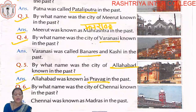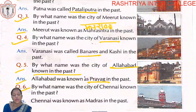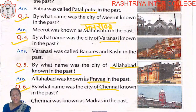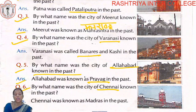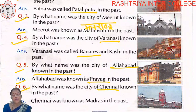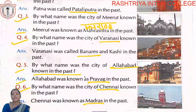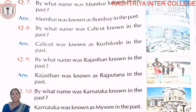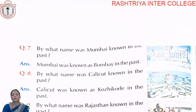Question number six: By what name was the city of Chennai known in the past? Chennai was known as Madras in the past. Chennai ko Madras ki naam se jaana jaata hai.